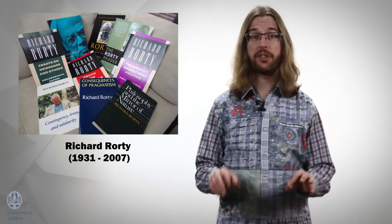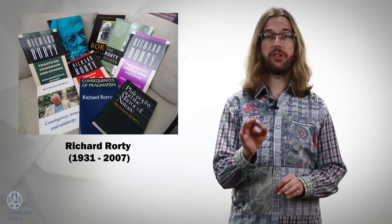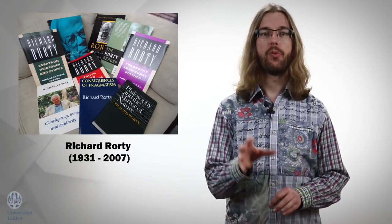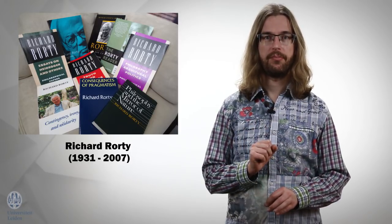In this lecture I want to consider one such story. The story told by the American pragmatist and postmodernist philosopher Richard Rorty. But before moving to Rorty's theory, I want to remind us of a thinker that we looked at earlier in this course. Thomas Kuhn. For Kuhn already gives us some insight into how there could be incompatible truths.